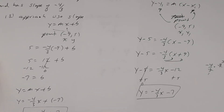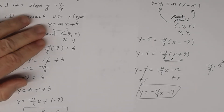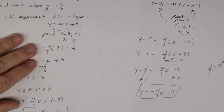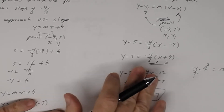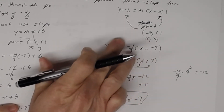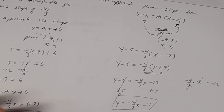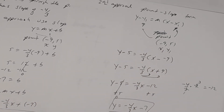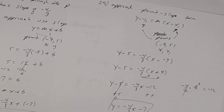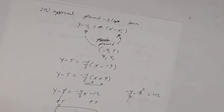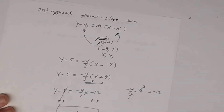Both approaches give the same answer. The first used slope-intercept form and the second used point-slope form — you have to know both.